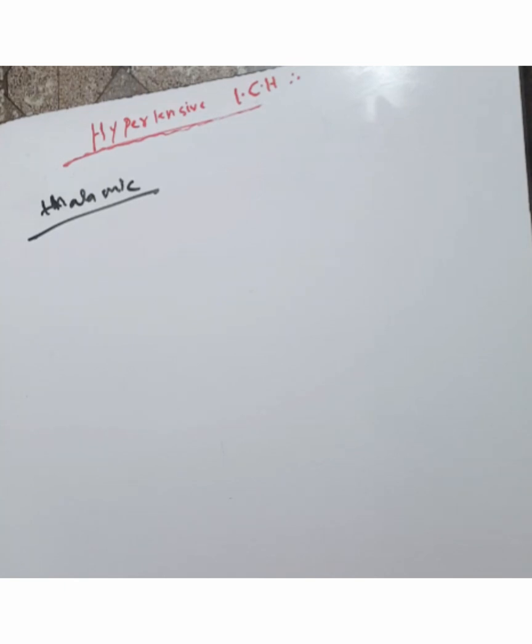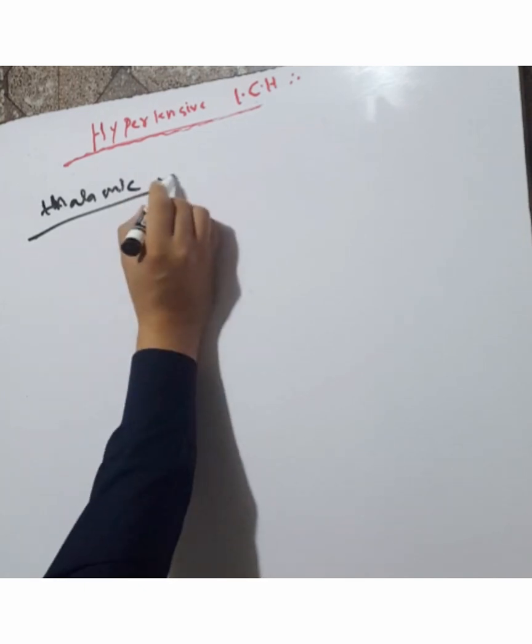Thalamic hemorrhage produces contralateral hemiplegia. This is one of the key signs when hemorrhage occurs in the thalamus, resulting in contralateral hemiplegia.